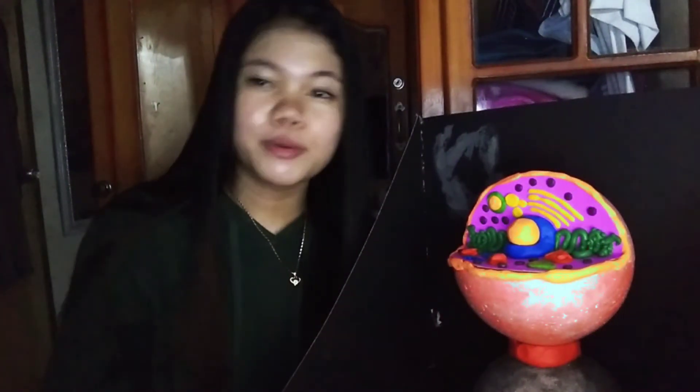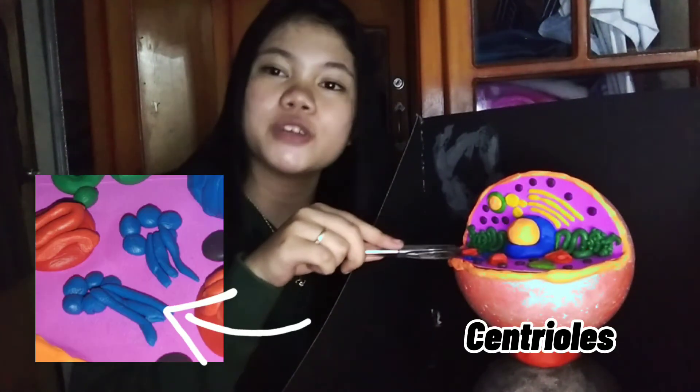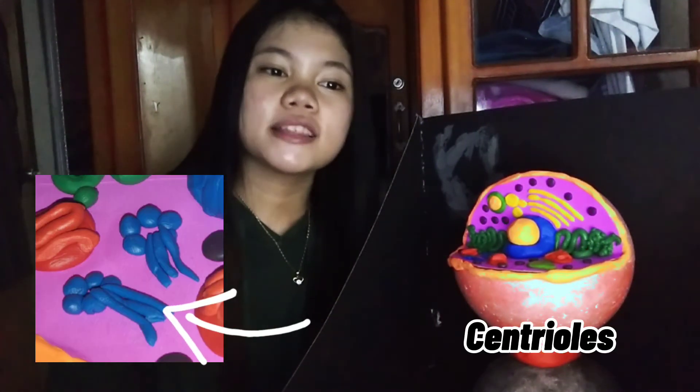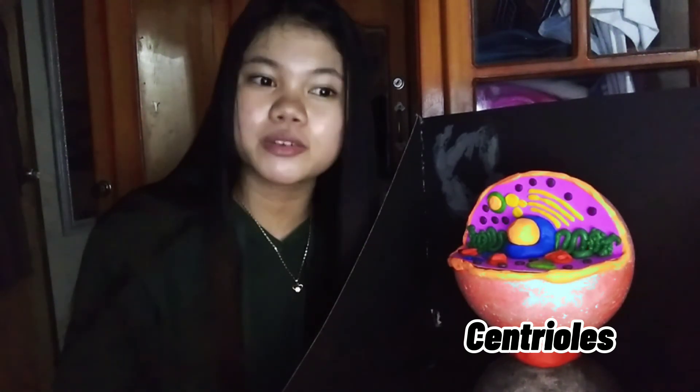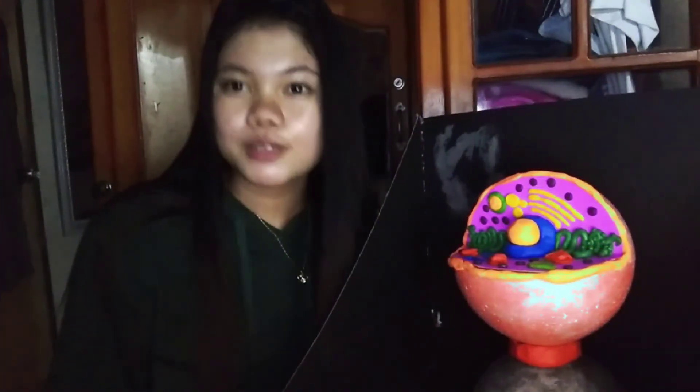And lastly, we have here our centrioles. They are paired barrel-shaped organelles located in the cytoplasm of animal cells near the nuclear envelope. So that's all for this video. I hope you enjoyed. Thank you for watching. God bless.